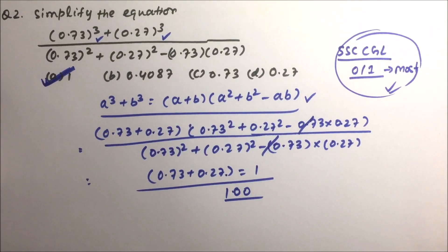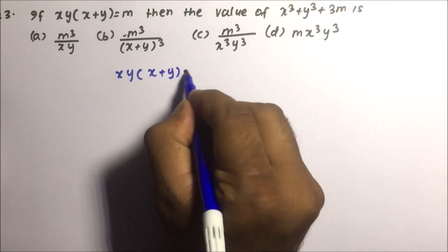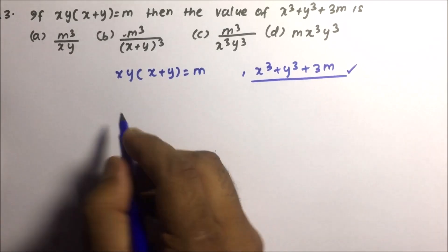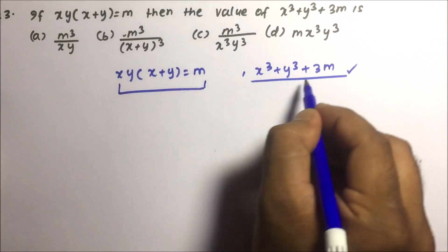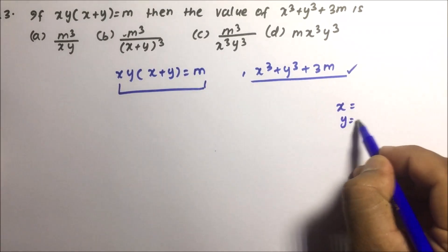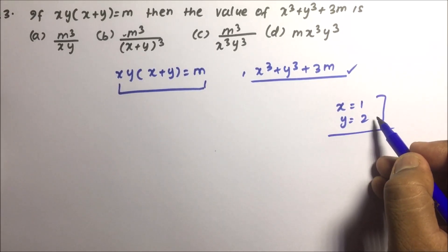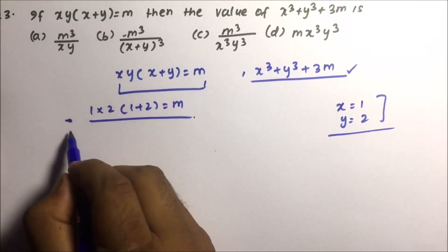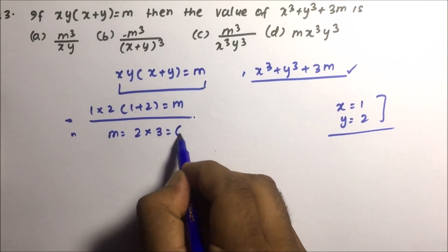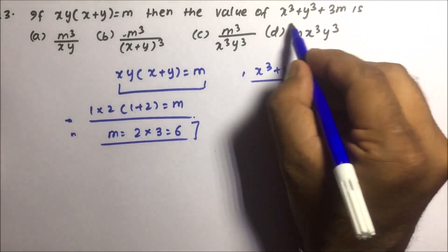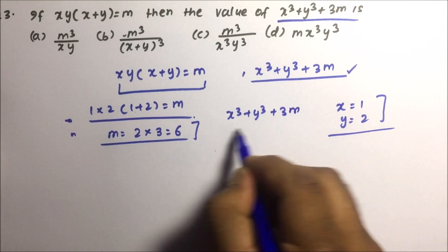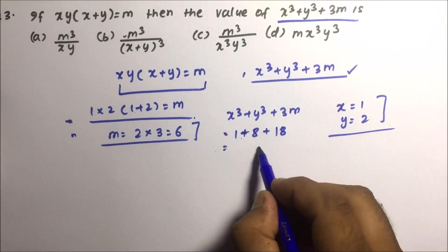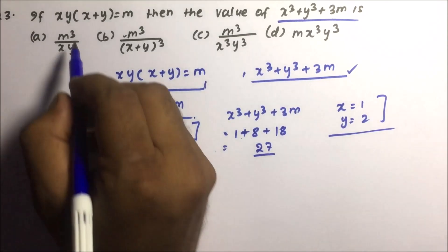Moving towards question number three: if xy(x + y) = m, then the value of x³ + y³ + 3m equals what? There are two methods. First, assume values: let x = 1 and y = 2. Then 1 × 2 × (1 + 2) = m, so m = 2 × 3 = 6. Now calculate x³ + y³ + 3m = 1³ + 2³ + 3 × 6 = 1 + 8 + 18 = 27.